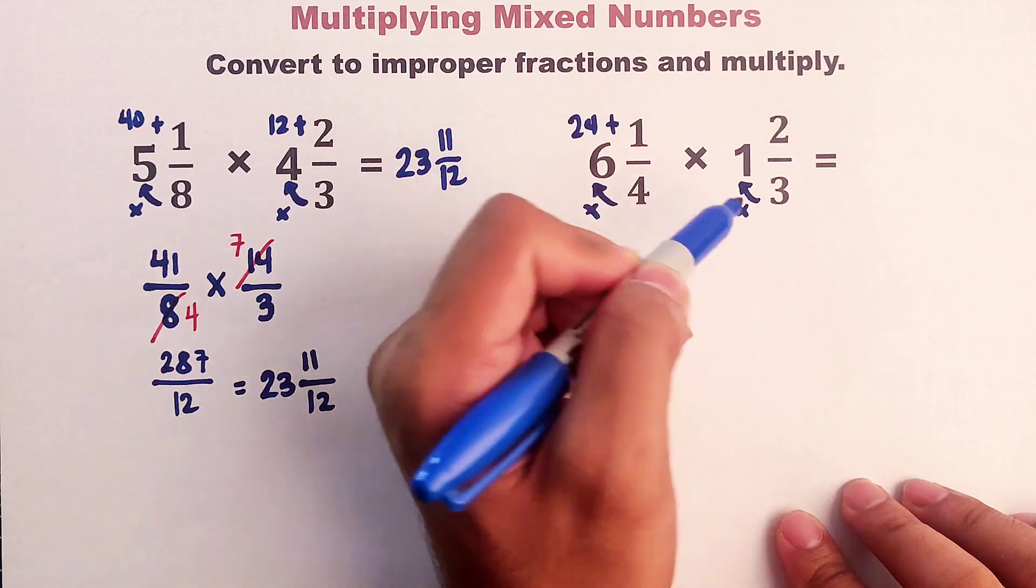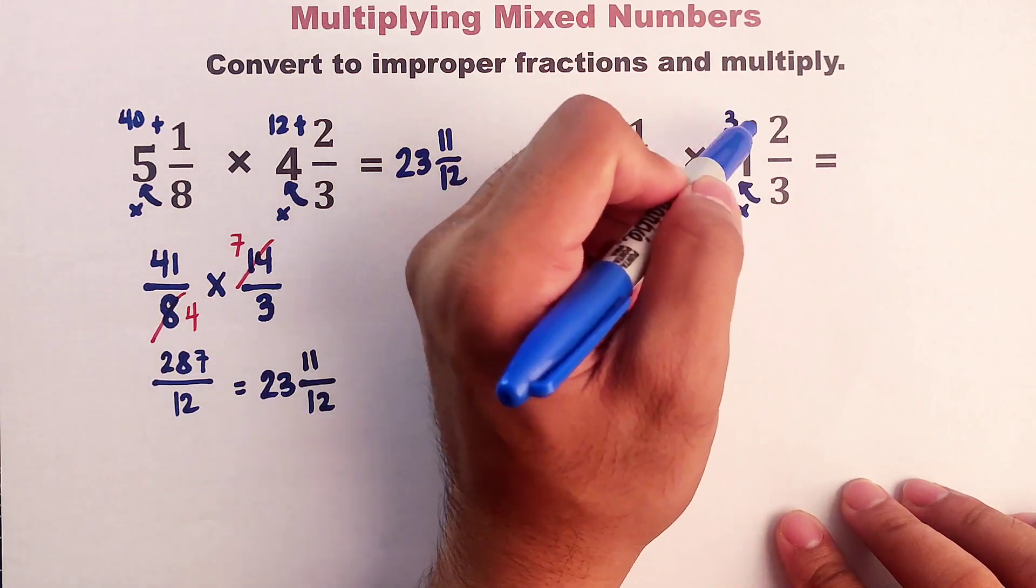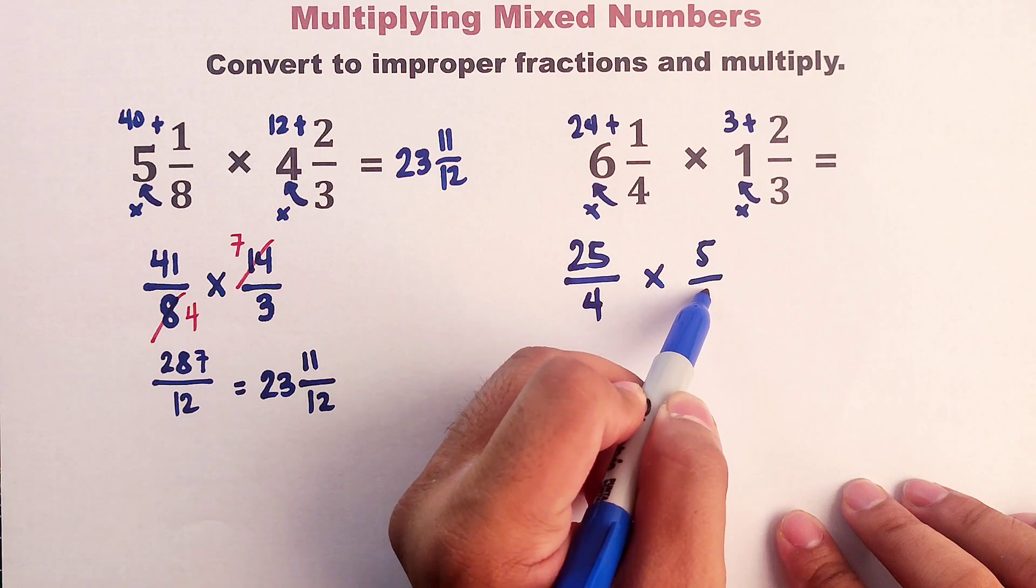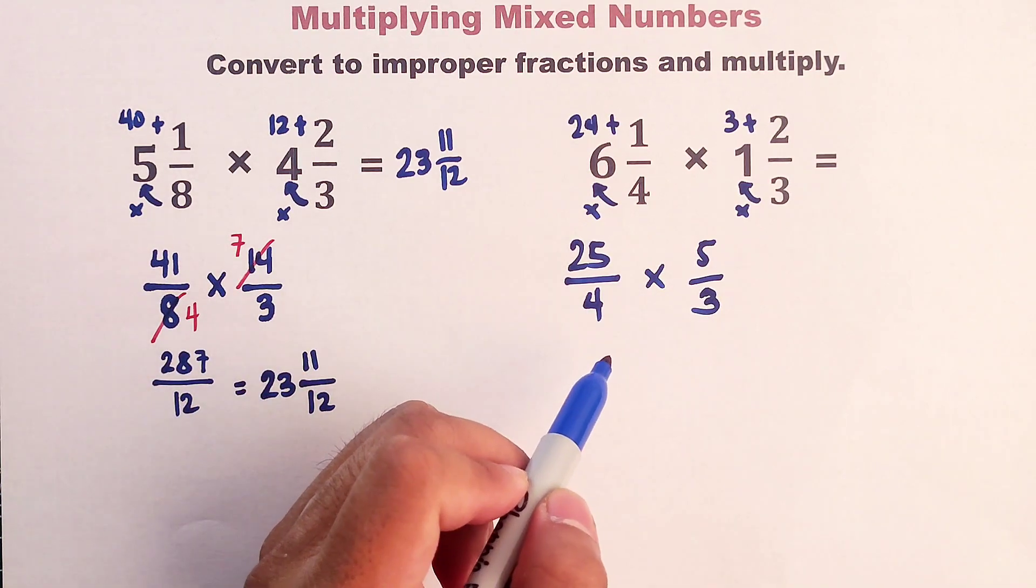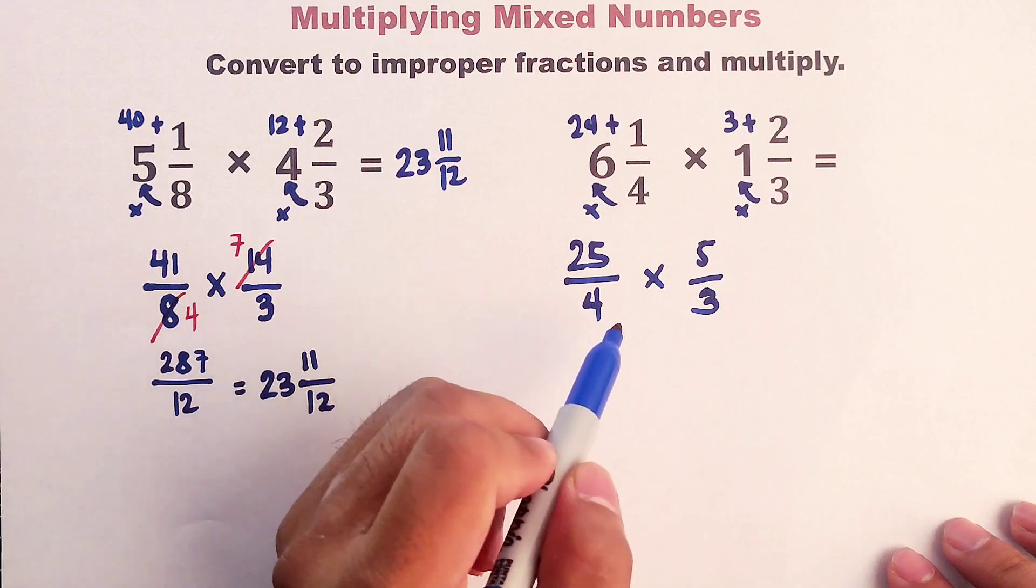This 1, 3 times 1 is 3. Plus 2, that would be 5 over 3. Now, by inspection, we cannot cancel anything from these fractions.